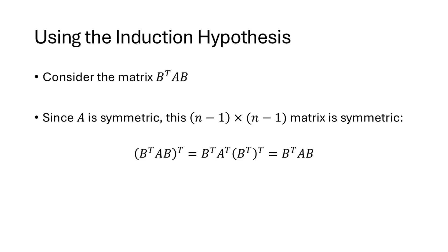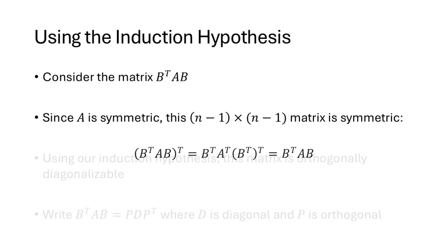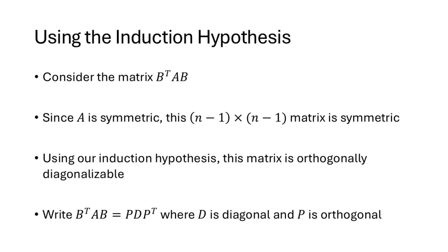Consider the matrix B^T AB. Since A is symmetric, this (n−1)×(n−1) matrix is also symmetric: taking its transpose gives (B^T AB)^T = B^T A^T B = B^T AB. By our induction hypothesis, since B^T AB is an (n−1)×(n−1) symmetric matrix, it must be orthogonally diagonalizable. Let's write B^T AB = PDP^T, where D is diagonal and P is an orthogonal matrix.